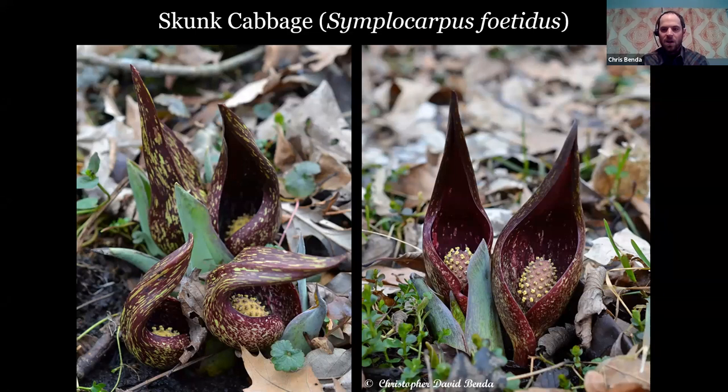You can see all the little flowers on the spadix. Skunk cabbage — a lot of maroon plants do emit a foul odor, and that is to attract carrion feeders. They're pollinated by flies and beetles and things attracted to rotting flesh. They often have a color and an odor that reflects that, bringing in early carrion feeders that are flying around.